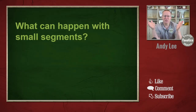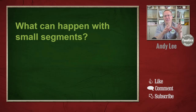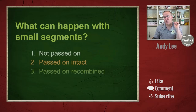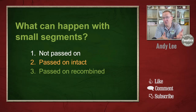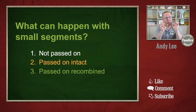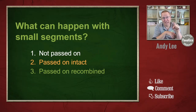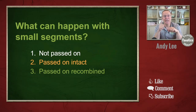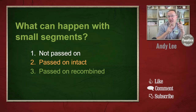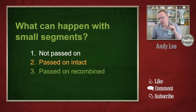What can possibly happen with a small segment — let's say seven centimorgans? There are three things: first, the small segment cannot be passed on to the children; second, it could be passed on intact; and third, it could be passed on recombined — in other words, it becomes an even smaller segment. Instead of seven centimorgans, now it's maybe a six, five, four, or three centimorgan segment.